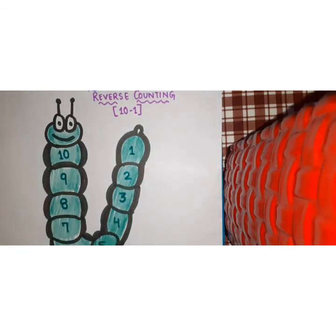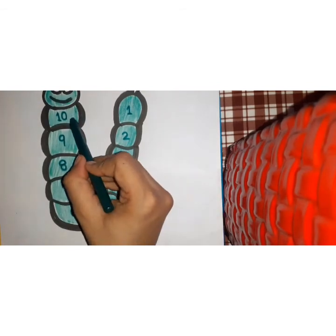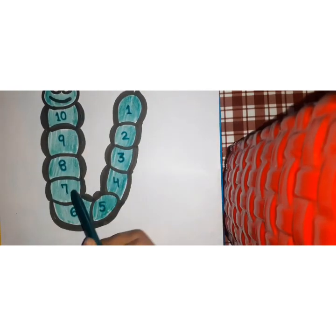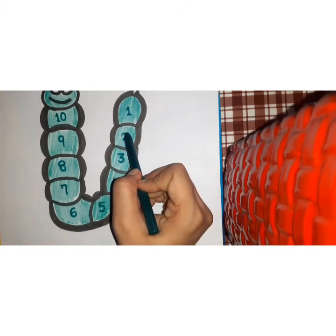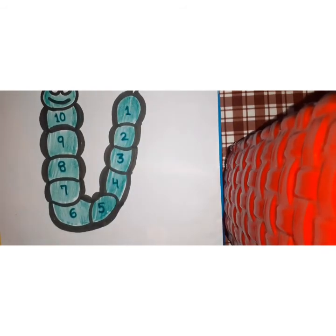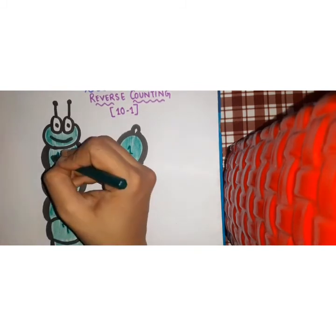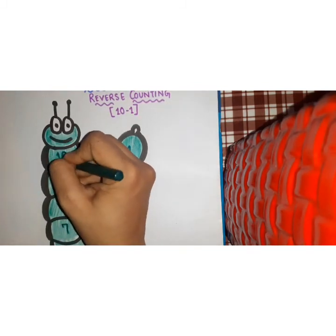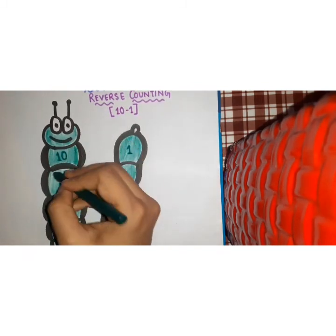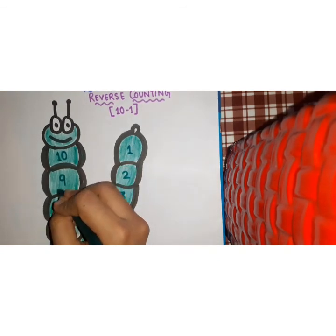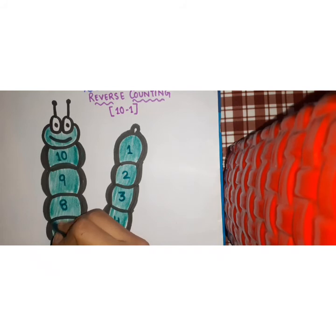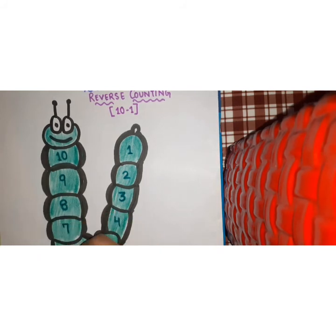So this is our reverse counting. 10 9 8 7 6 5 4 3 2 and 1. Again 10 9 8 7 6 5 4 3 2 and 1.